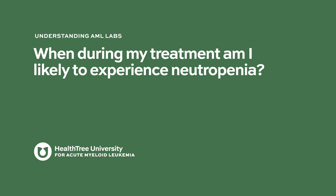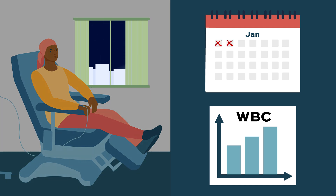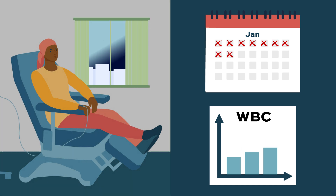When during your treatment are you likely to experience neutropenia? It depends on what treatment you are receiving and your response to it. For younger patients with a good performance status, we generally start with induction chemotherapy. Typically, within seven to ten days after receiving chemotherapy, you should begin to see a lowering of your white blood cell count.